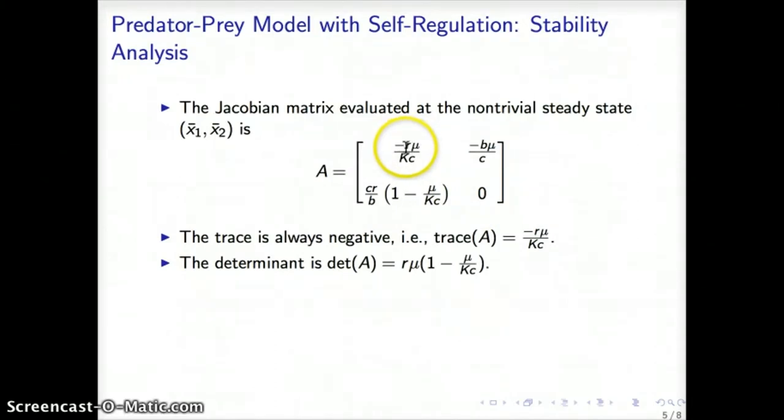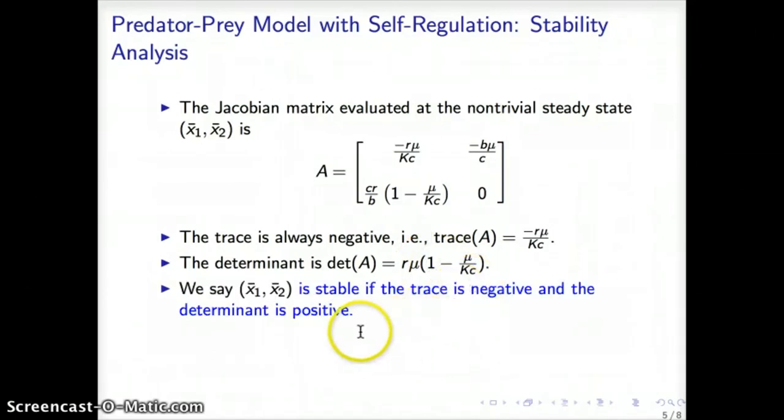The determinant is computed by multiplying this term times 0 minus this term here multiplied by this one. In this case, the determinant reduces to this expression. We have to remember that stability is implied by having a negative trace and a positive determinant. Another thing to remember is the trace of a matrix always coincides with the sum of the eigenvalues of that matrix and the determinant coincides with the product of the eigenvalues.